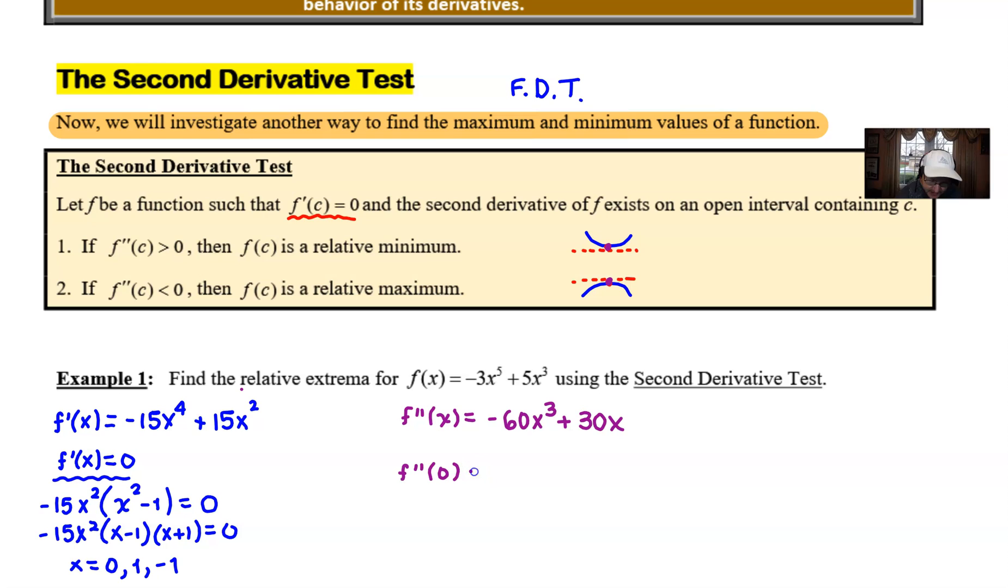So we can evaluate f''(0), f''(1), and f''(-1). So as we plug in zero it's pretty clear you've got -60 times 0^3. You probably don't even need to write this out. You're going to get zero for a result.